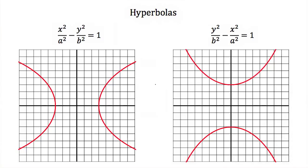There are two different hyperbolas you will see: some open in the positive and negative x direction, and some open in the positive and negative y direction. If y is being subtracted, the hyperbola opens in the positive and negative x direction. If x is being subtracted, or x has the negative in front of it, then the hyperbola opens in the positive and negative y direction.